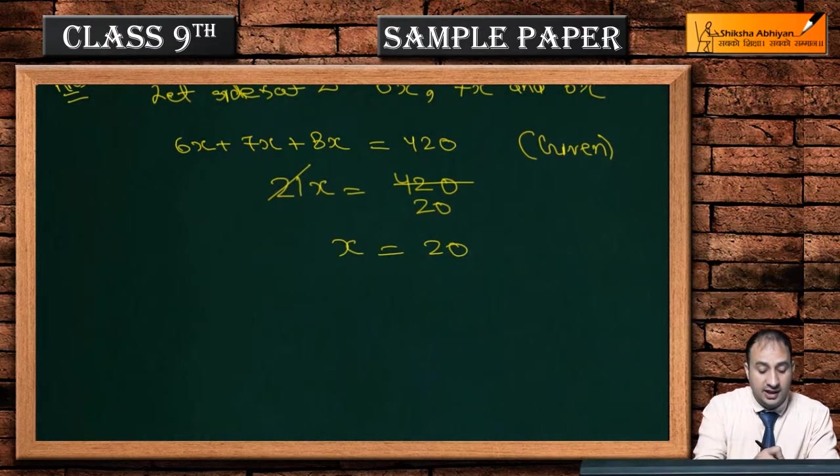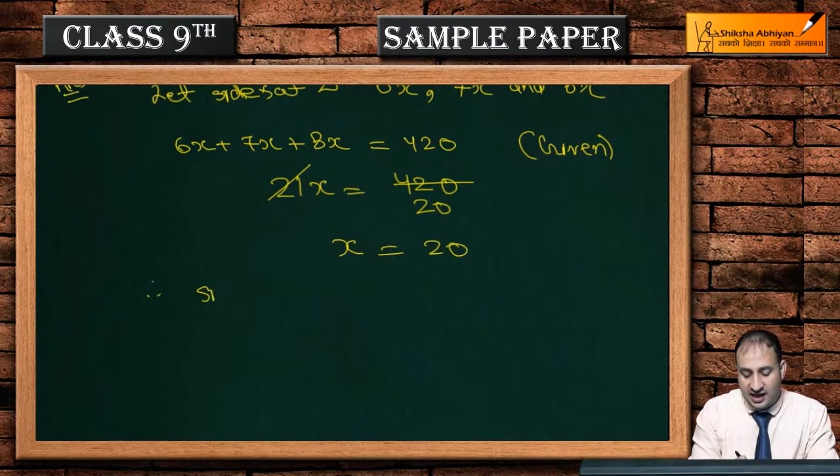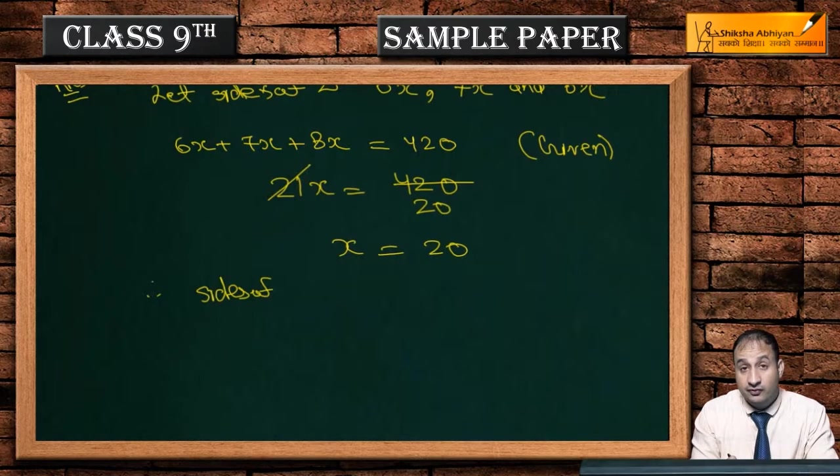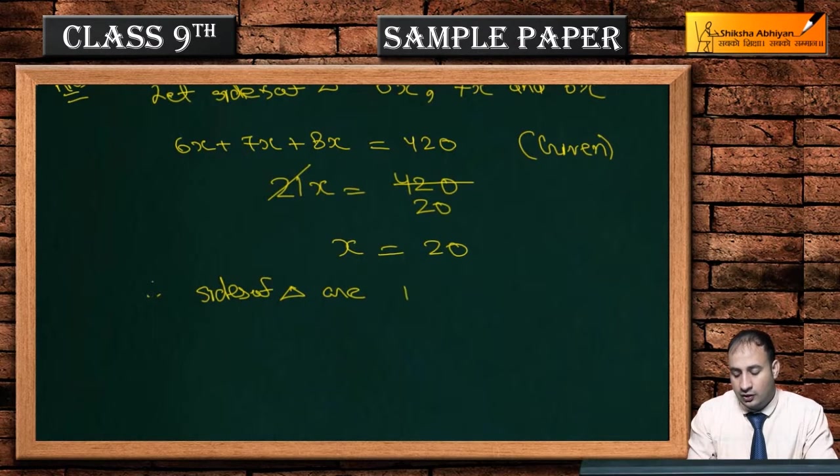Now we multiply these values: 210 times 90 times 70 times 50. First, 210 times 90 equals 18,900. Then 18,900 times 70 equals 1,323,000. Finally, 1,323,000 times 50 gives us the value under the square root.